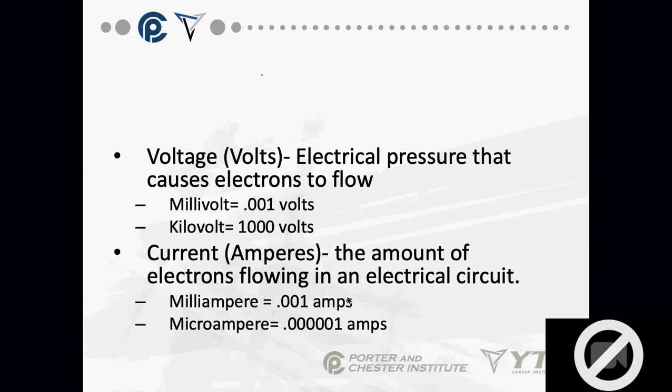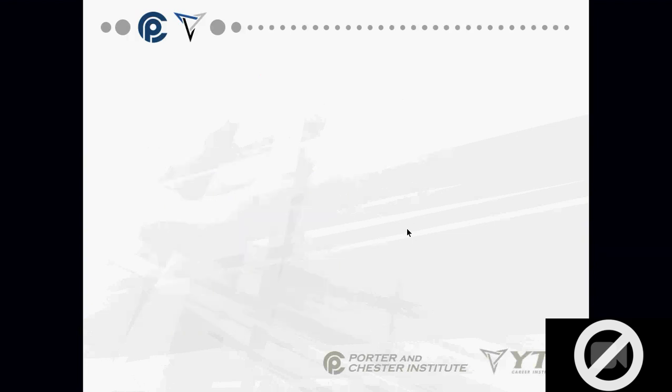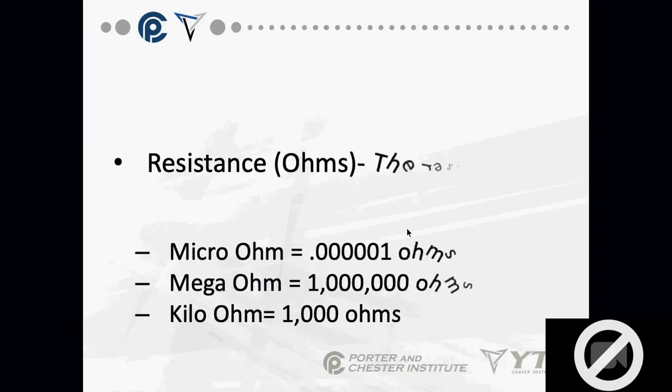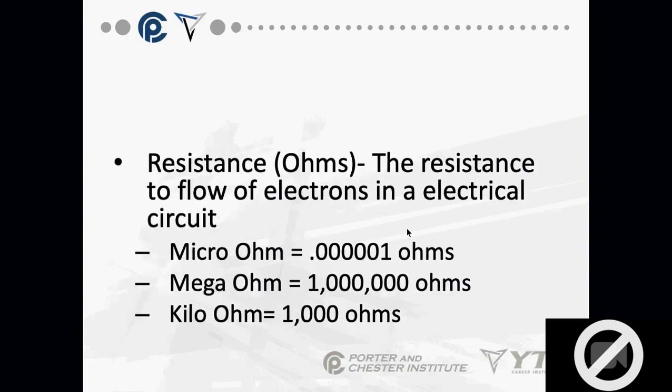We don't deal much with milliamps and microamps, though you might come across milliamp readings in gas heat with ignition controls. We're more in the one-amp stage for control circuits and talking up to 50 amps for most compressors.